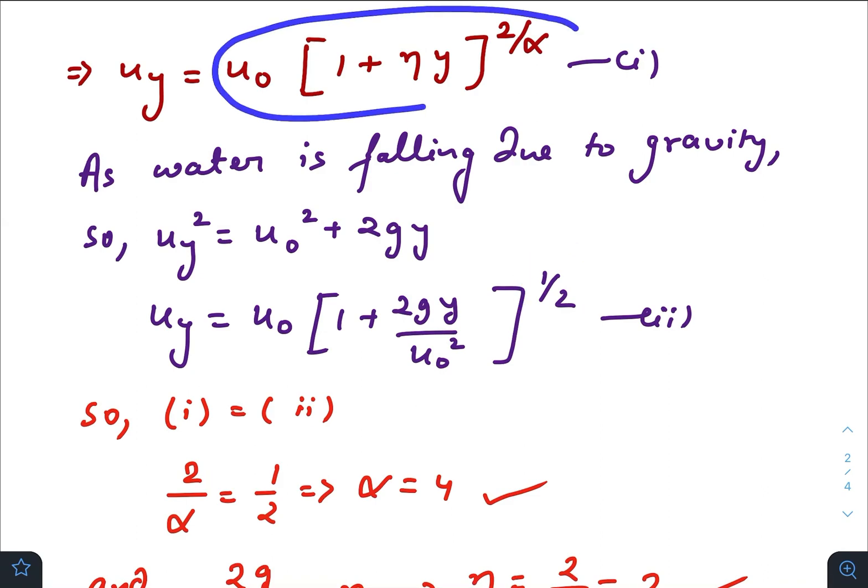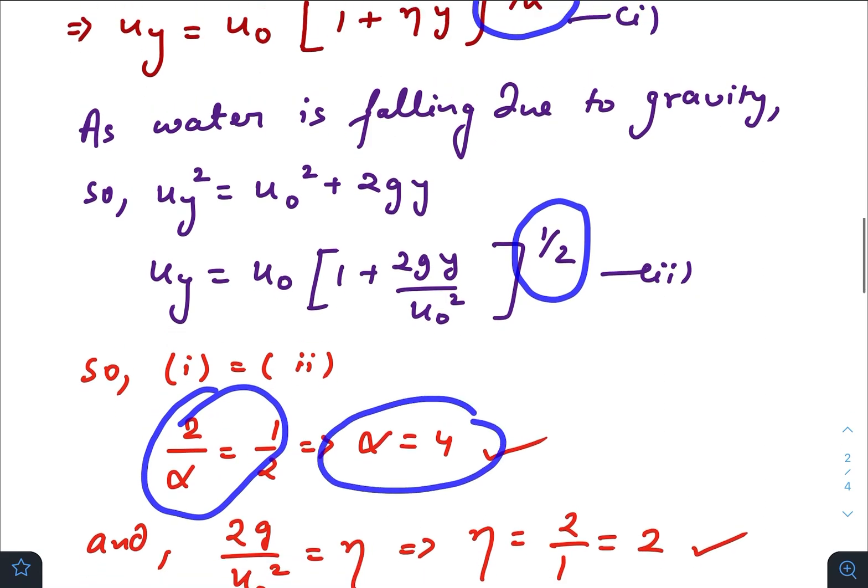Now, if you compare these two expressions of u_y, you can just adjust the power: 2 by alpha equals 1 by 2, so alpha equals 4.